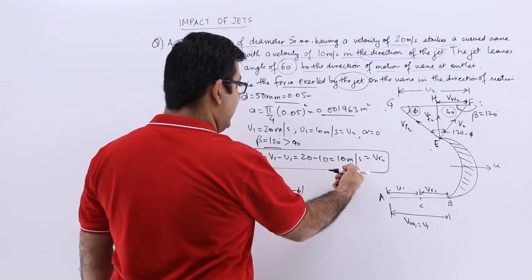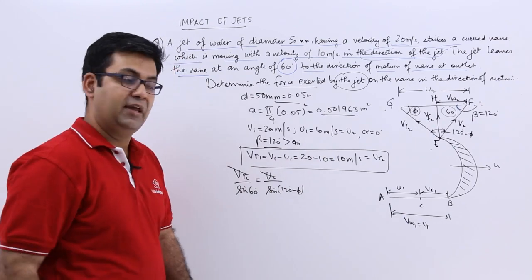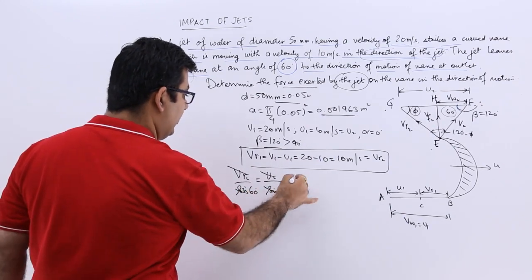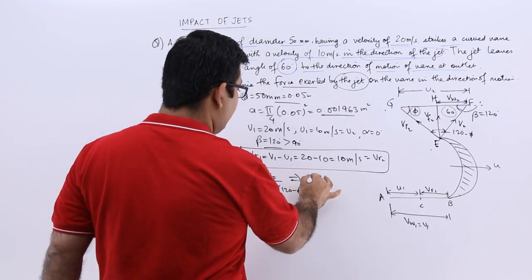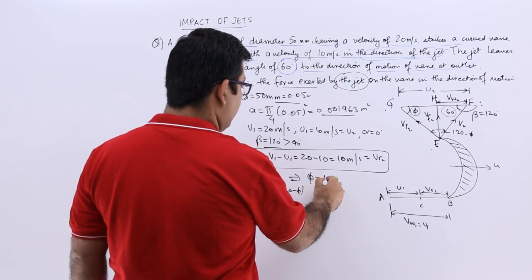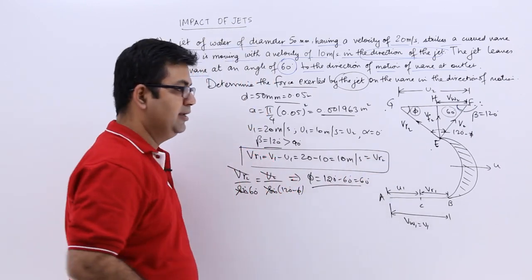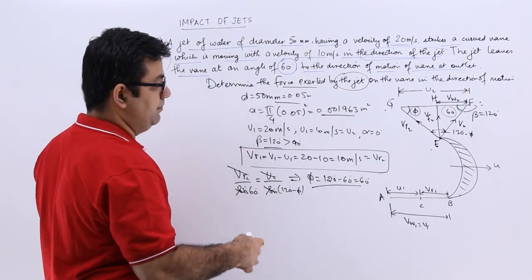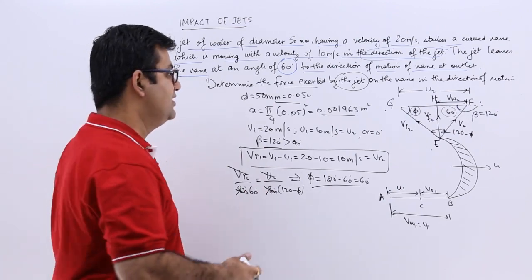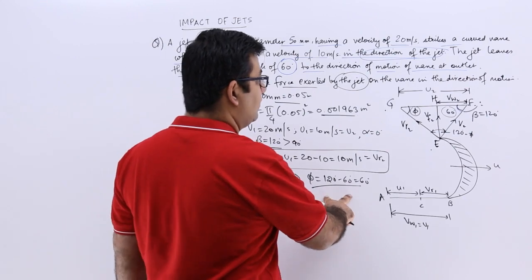So what is vr2? vr2 is 10. And u2 is also 10. So I can strike off these two things. You can also strike off sine. This would give you a value of phi as 120 minus 60, which will be equal to 60. So phi is equal to 60. So the blade outlet angle is 60 degrees.